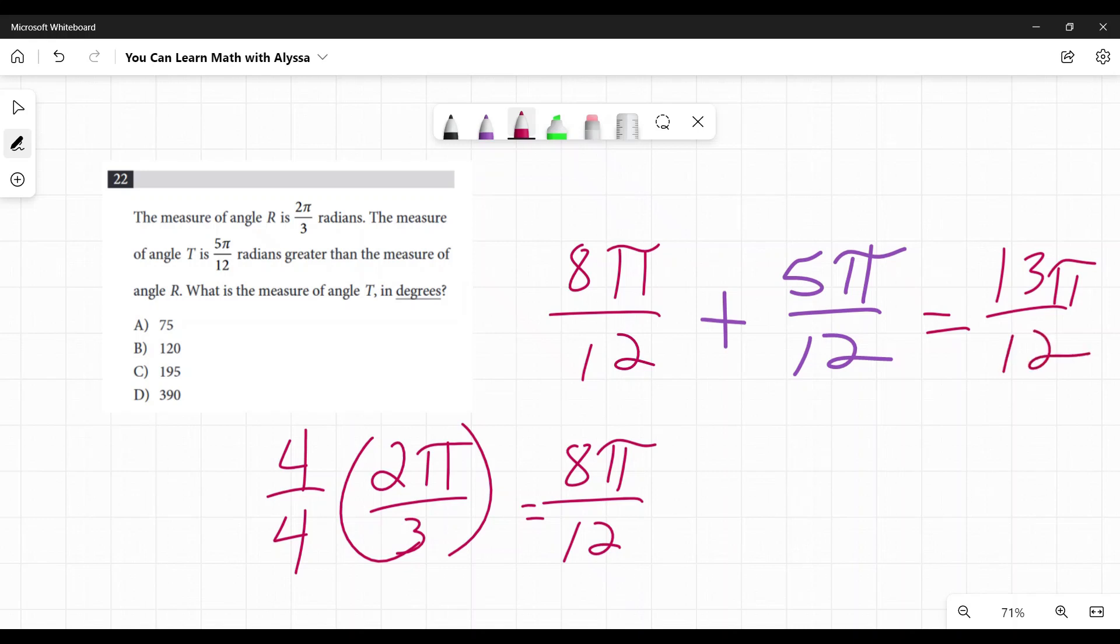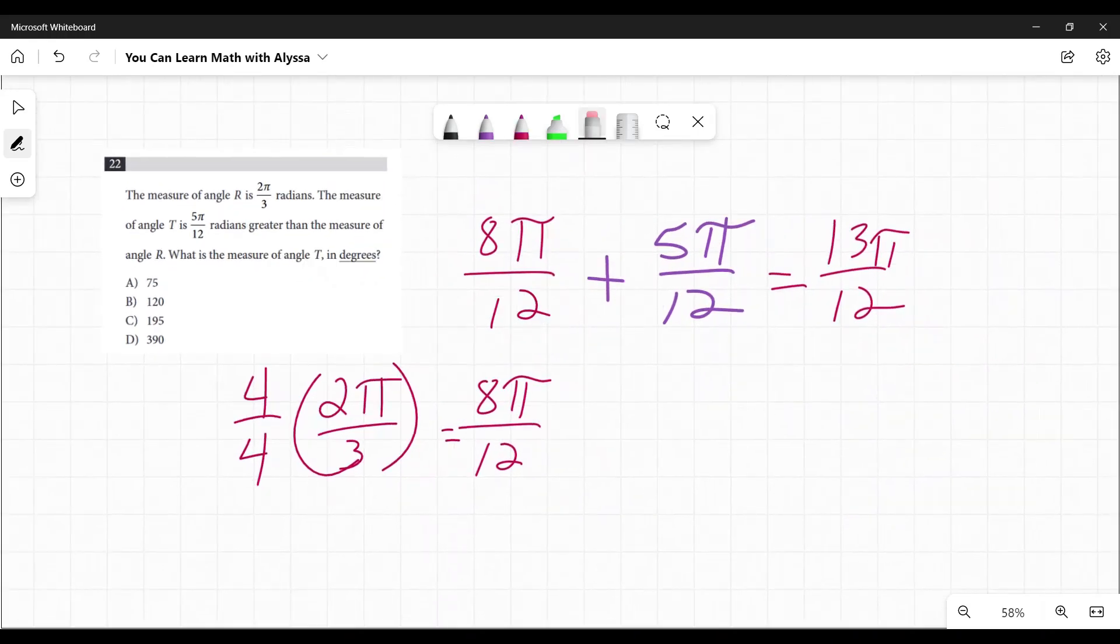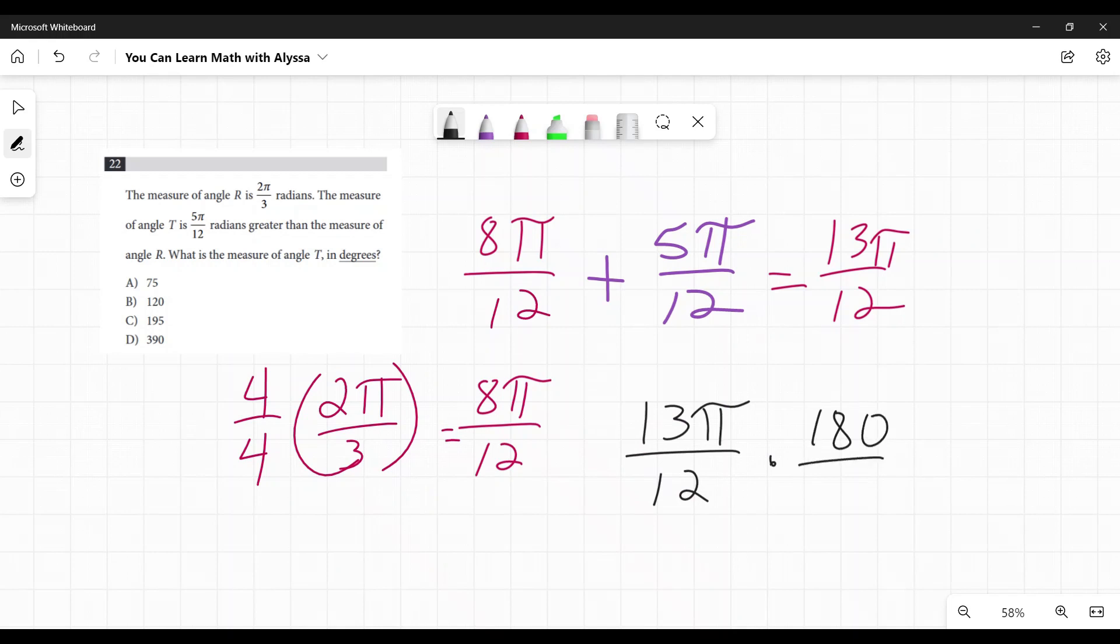Now they want to know, what is this angle in degrees? Okay, so 13π over 12, I need to convert that to degrees. To convert to degrees, you multiply by 180 over π.